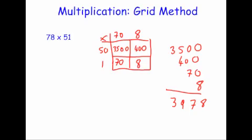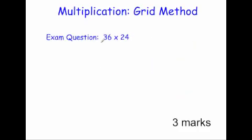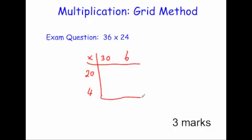And finally, let's have a look at a typical exam question. So this is a typical exam question. The question is worth three marks. And it says work out 36 multiplied by 24. And again, let's use the grid method. So put our grid down. Multiplication sign. Split our 36 up into 30 and 6. And split our 24 up into 20 and 4. And then you complete your grid.